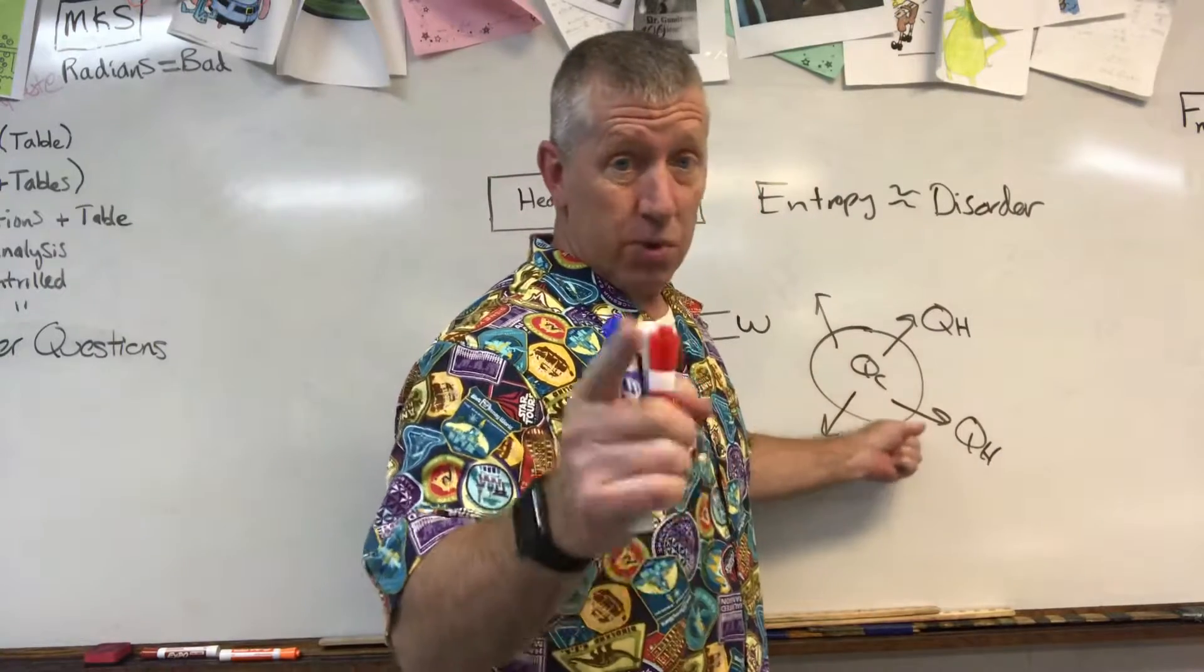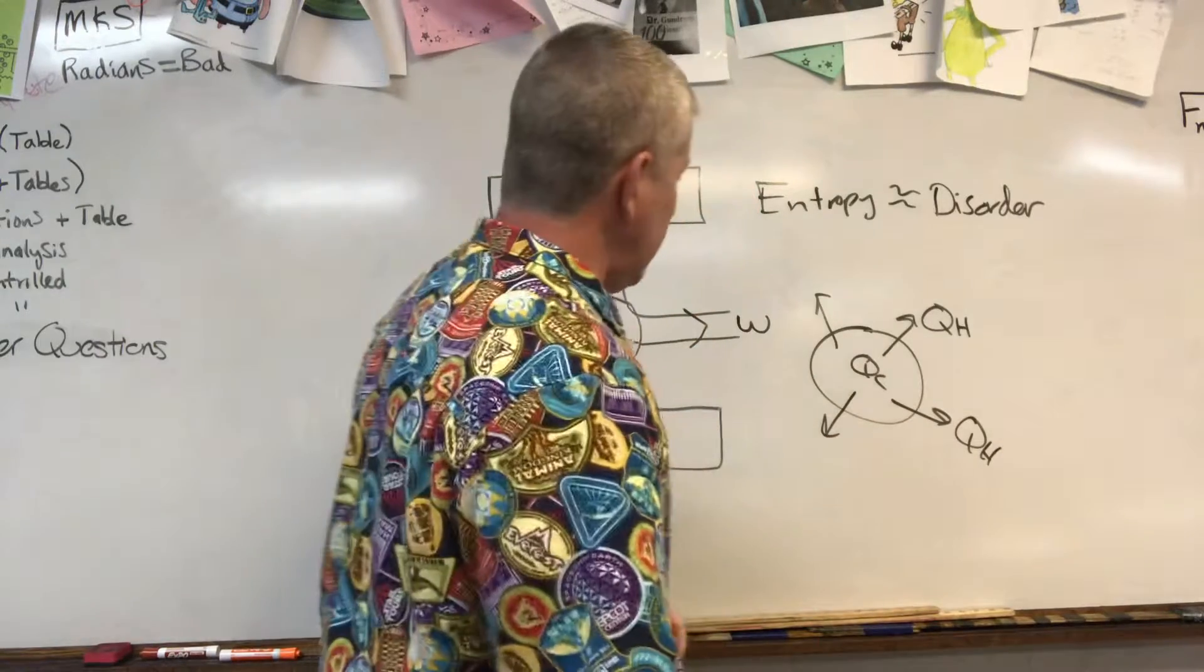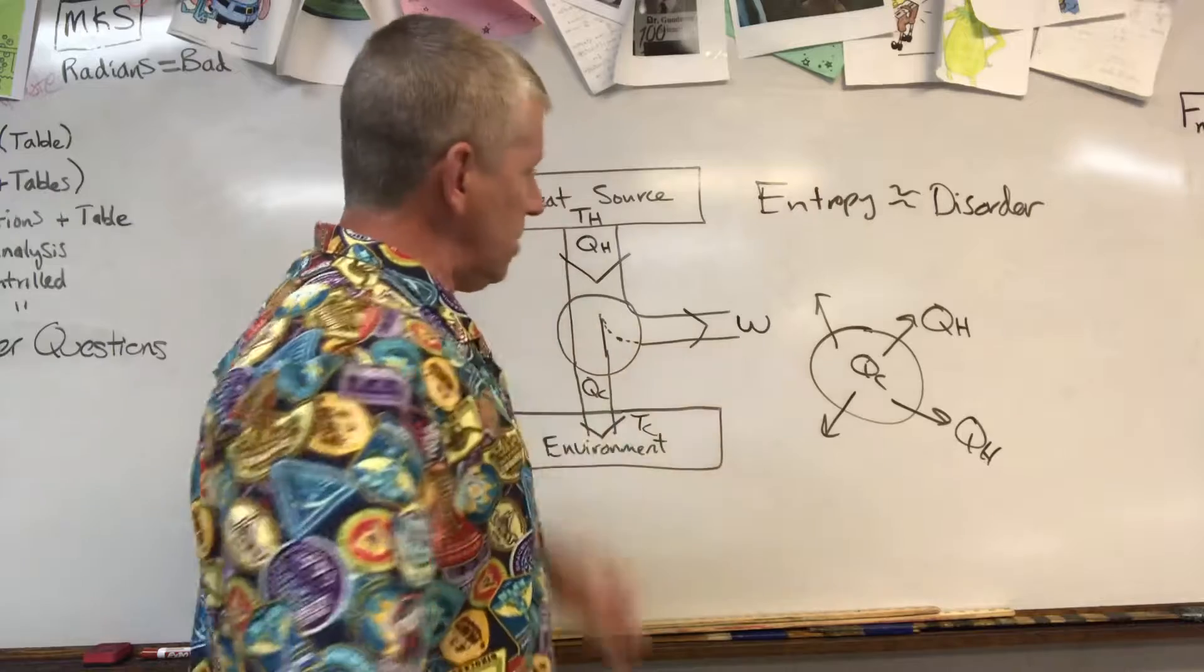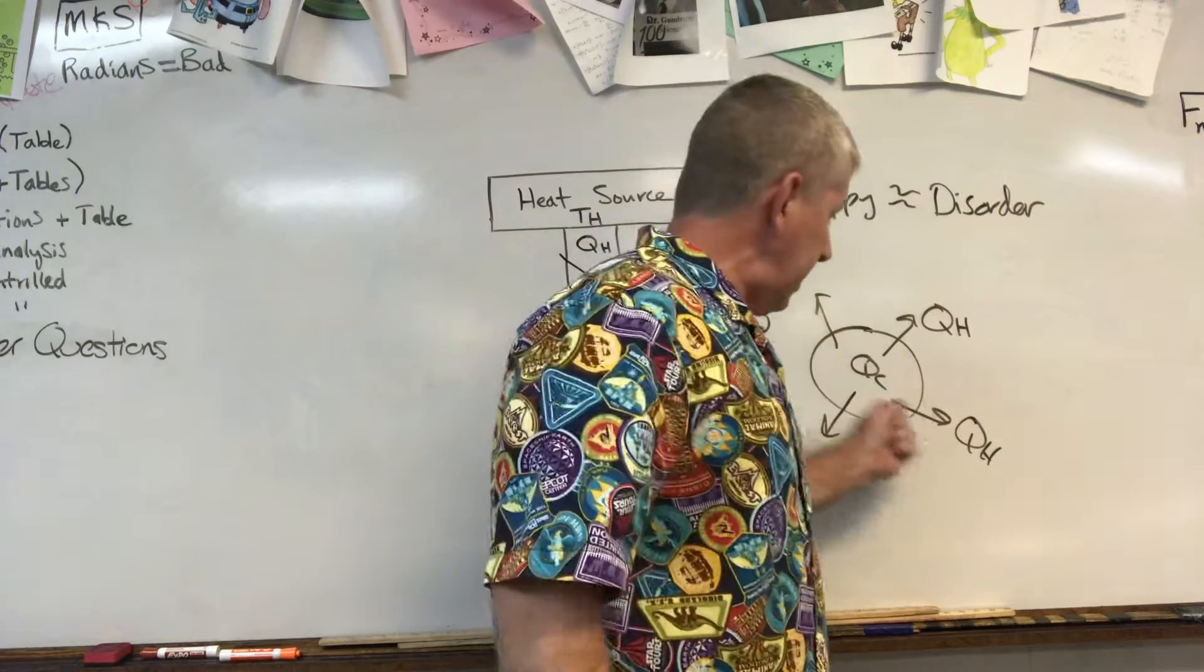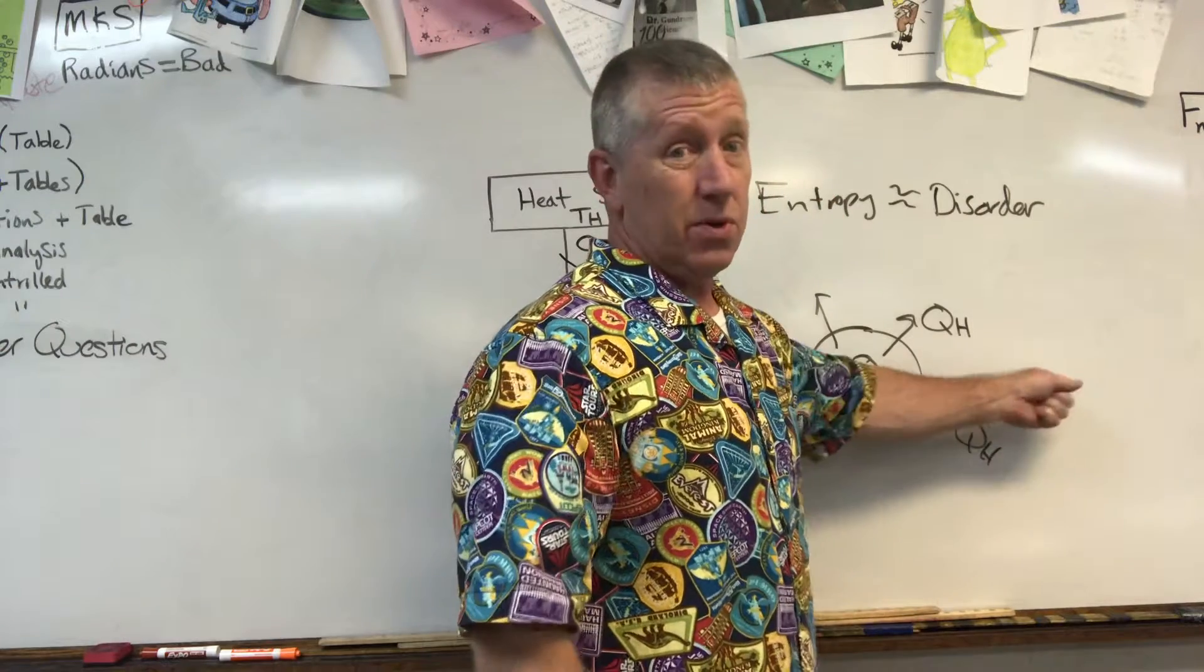How you cannot get absolute zero and why the second law says you can't. Because heat flows from out of the cold stuff, from the thing that you're trying to get really cold. So you've got to drag heat out, and what happens is it's hot out here so it's going to flow right back in.